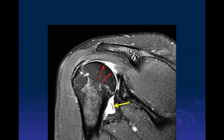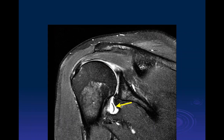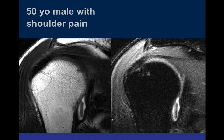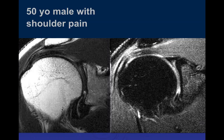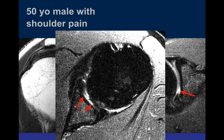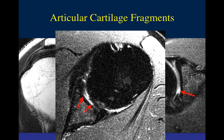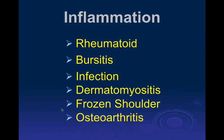In this 50-year-old male with shoulder pain, coronal T2 and PD fat-sat images show a linear hypointense structure that could be a fragment of articular cartilage or a loose body — possibly multiple fragments. This is likely a cartilaginous loose body, with the donor site visible on the humeral head.